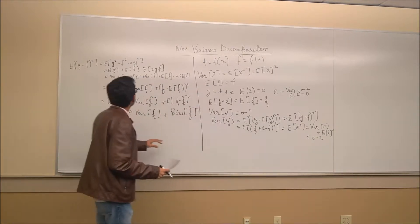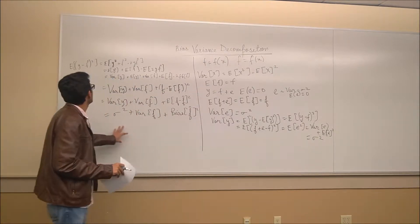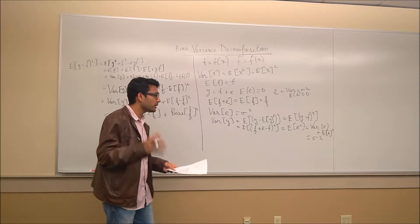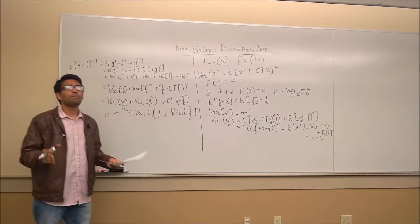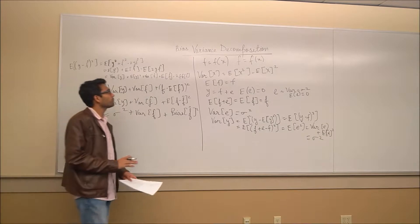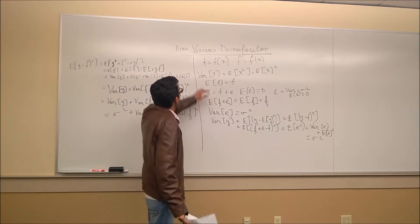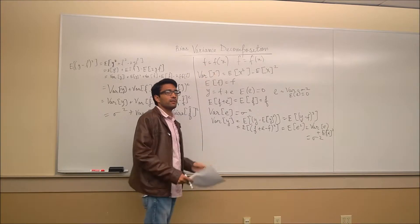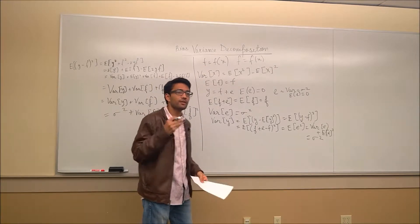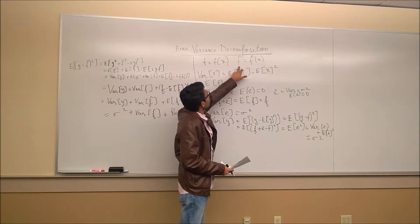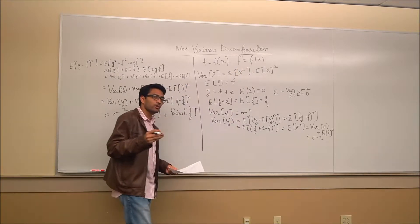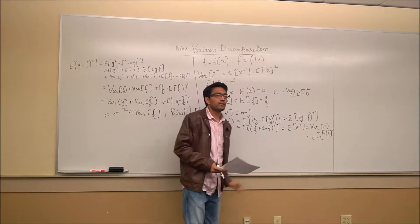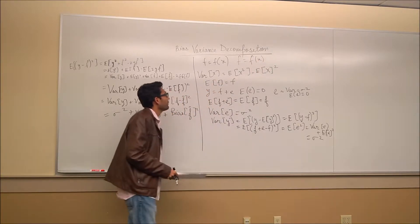Now let's take a look at the claim we made earlier about the expectation of squared error decomposing into bias, variance, and a constant. Before we do that, let's look at what we are working with. We are assuming that f is the true function we are trying to find, and f-cap is the function that our model is predicting. Both are functions of x, the variable we are working with.